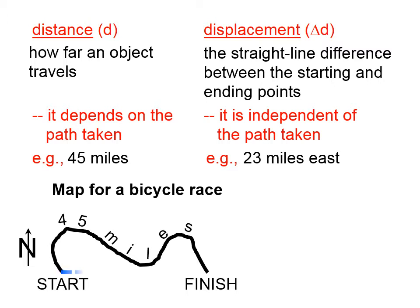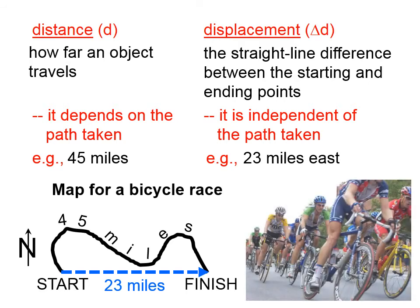The displacement, however, just takes into account where we start and where we finish. So the displacement for this example would be something like 23 miles east.